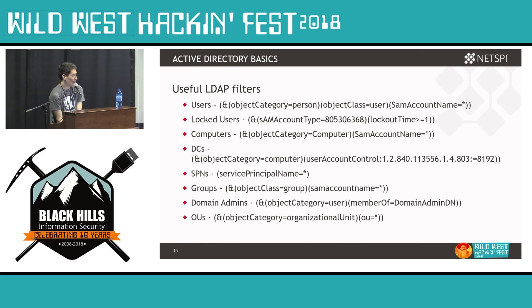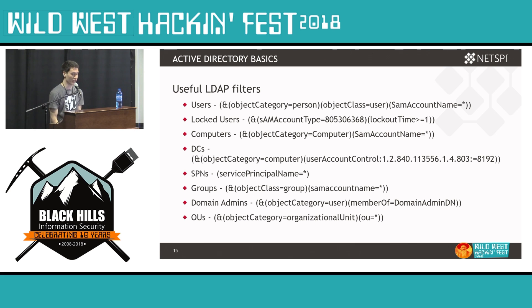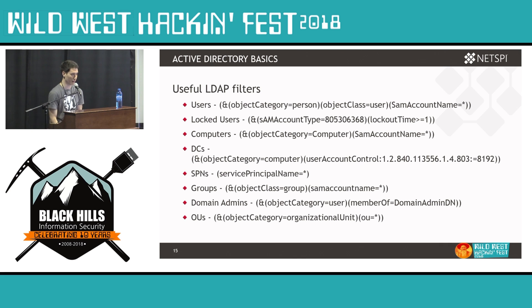Here's a list of useful LDAP filters. The one thing I wanted to note is for DCs — after user account control, you'll notice an odd string of digits. That's an object identifier — specifically an LDAP matching rule AND. A match is only found if all of those bits from the attribute match the value, basically equivalent to a bitwise AND operator. Those are some examples of useful filters.